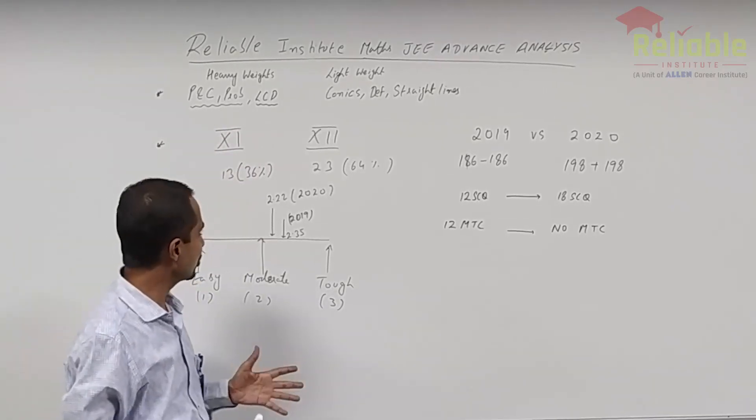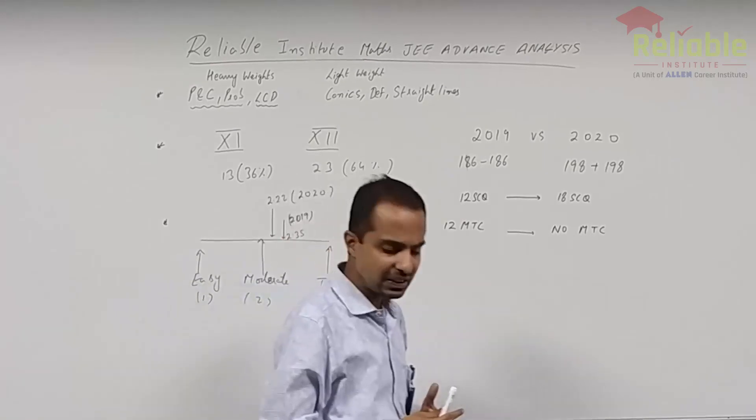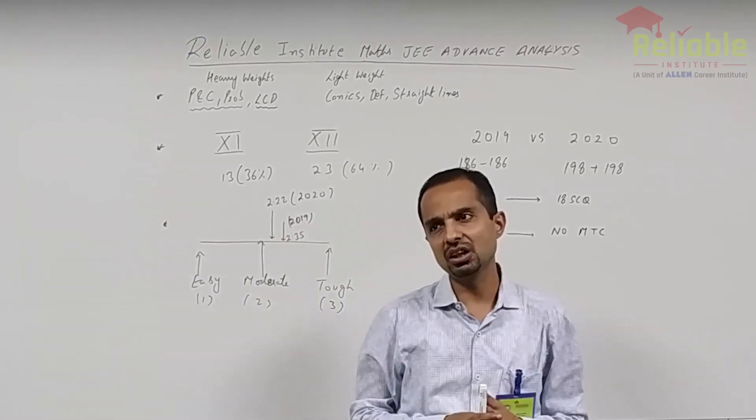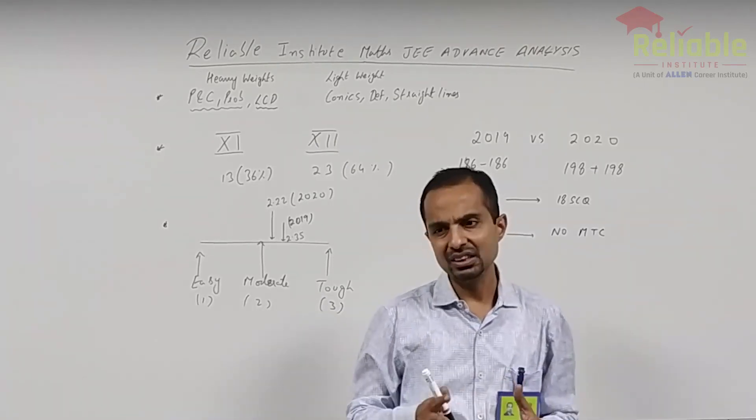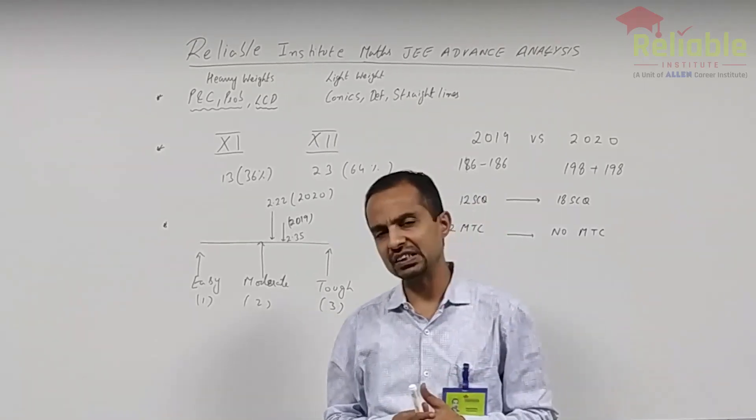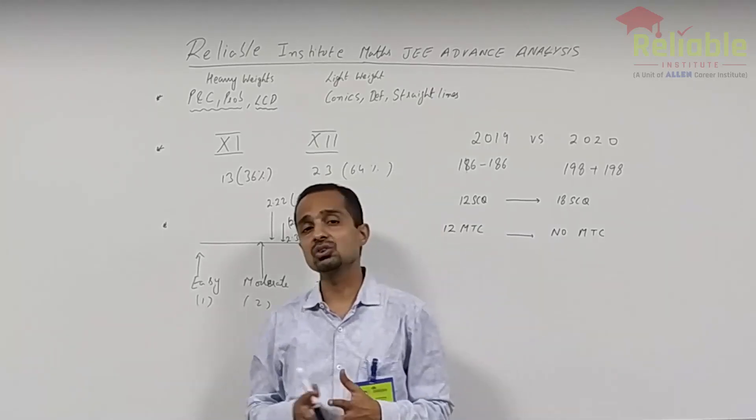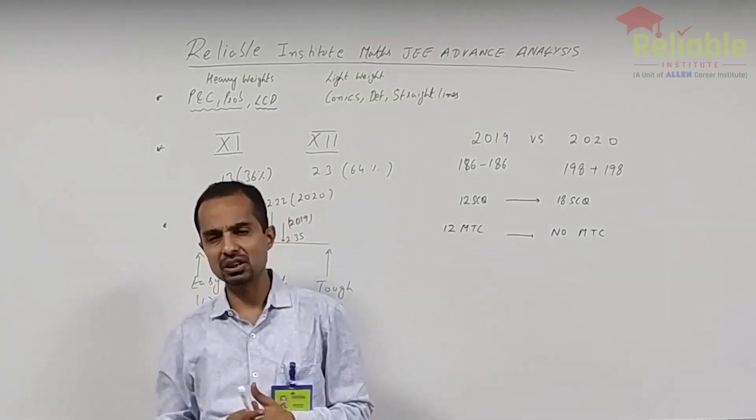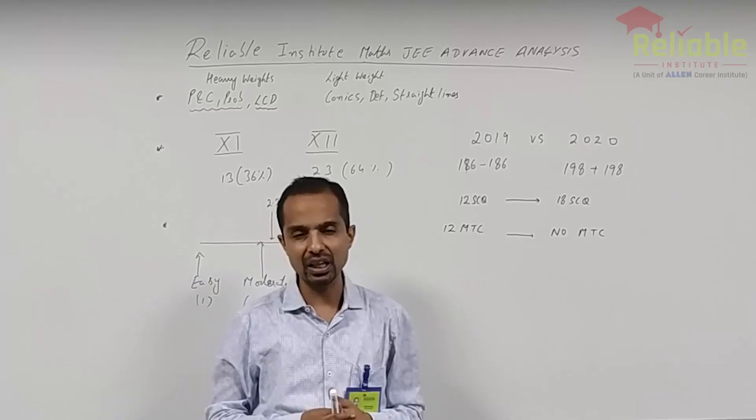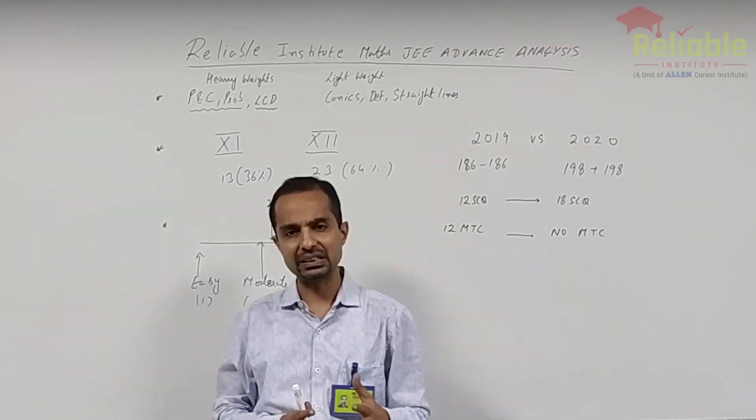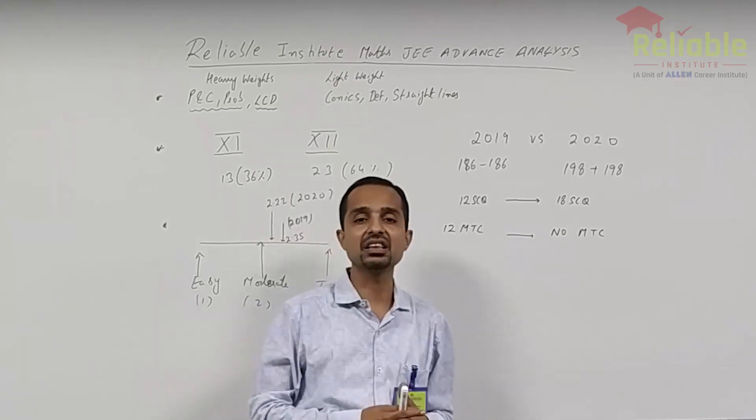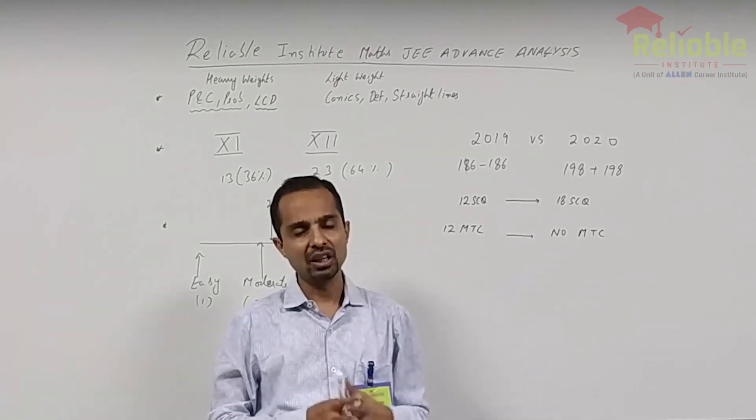Let's kind of say, more or less, from analysis point of view, the rankings which were there at the percentages of 2019, like 75%, whosoever was scoring 75% or more scored top 100 rank, 84% or so scored top 10 rank. I believe, looking at the maths paper, it's going to be more or less same.